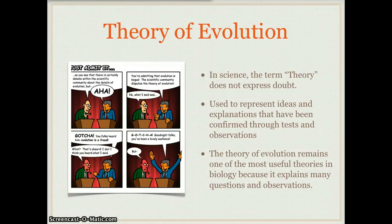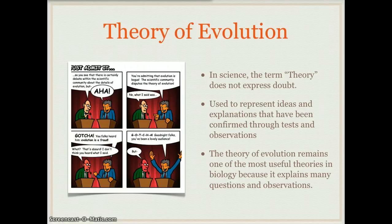In common terms, a theory is a hunch, something that you think might happen but you don't really have a lot of data to back it up. For example, I could have a theory that the Red Sox will win the World Series — that's a common theory. In science, a theory has a lot of data and a lot of testing that backs it up. They have been confirmed through tests and observations.